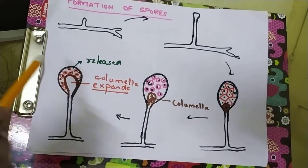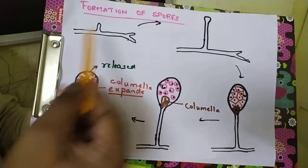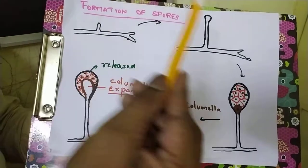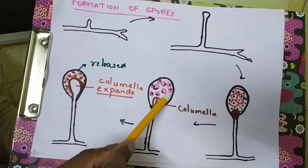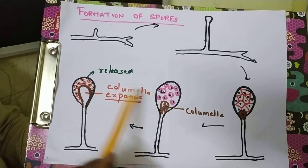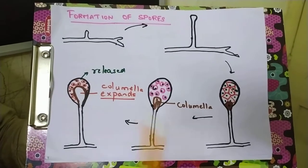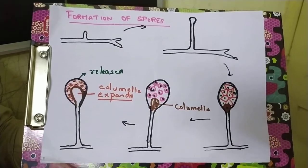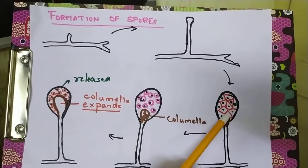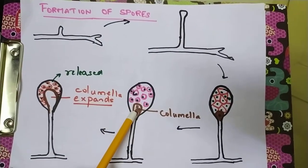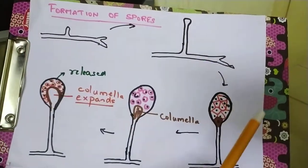Every spore develops into a thread-like mycelium structure and again produces a similar sporangium. The cycle continues: cytoplasmic cleavage, each cytoplasmic bit becomes a spore, columella, spore sac, and spores get released — that's how asexual reproduction keeps continuing. Keep the keywords in mind: sporangium, cytoplasmic cleavage, columella, the vacuolated region, and the spore sac.